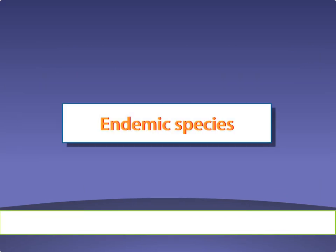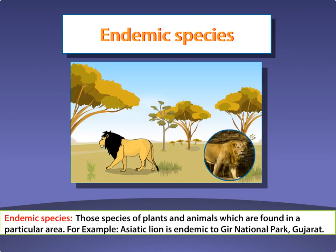Endemic species. Those species of plants and animals which are found in a particular area are known as endemic species. The Asiatic lion is endemic to Gir National Park, Gujarat.